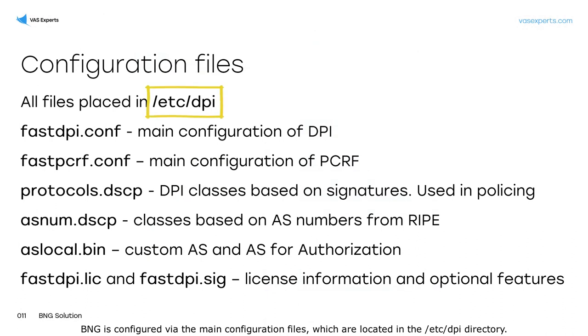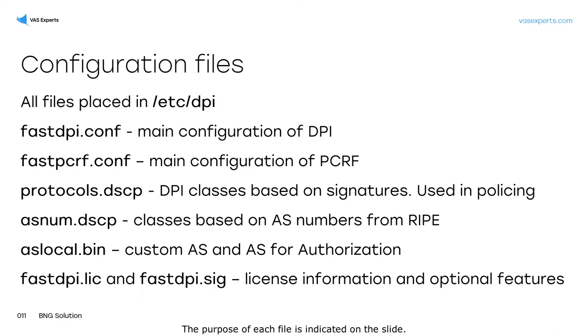BNG is configured via the main configuration files, which are located in the /etc/dpi directory. The purpose of each file is indicated on the slide.